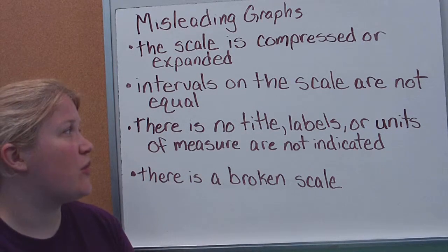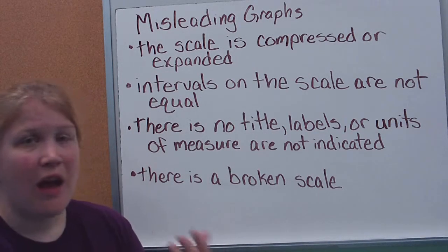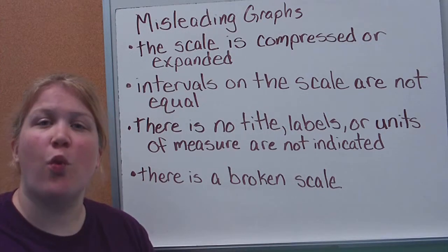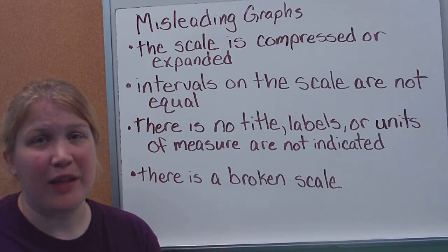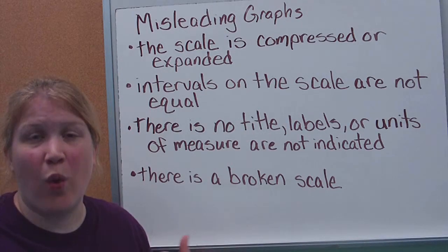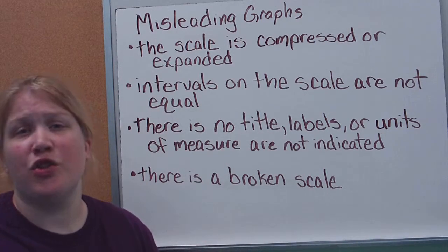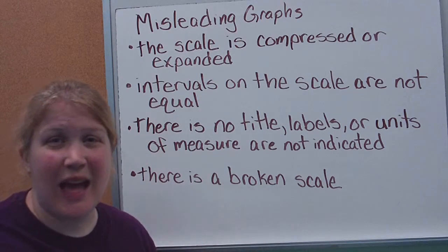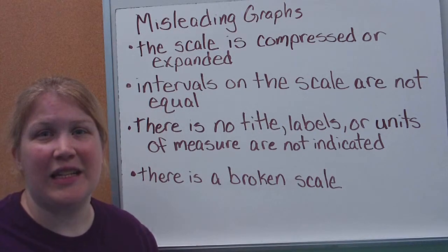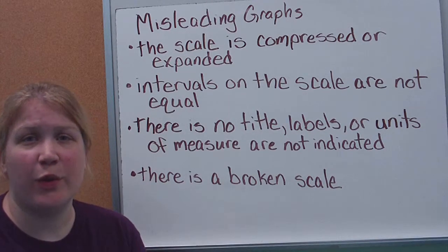Another thing is if there's no titles, labels, or if the units of measure are not being indicated. You know, feet is going to be a lot different than centimeters. So what did we measure it in? By not labeling that, you're leaving your graph open for interpretation depending on what unit the person assumes it was measured in. The same thing without a title or a label. You're starting to assume what should be on that side, and that can also mislead you.